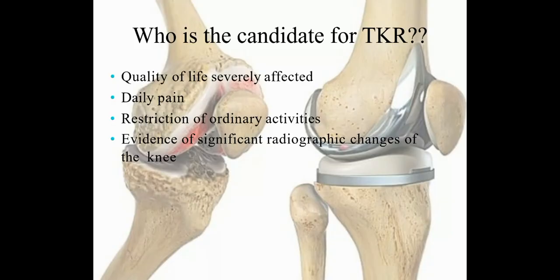The right candidate for TKR is a patient whose quality of life is severely affected by osteoarthritis of the knee joint, experiencing daily pain, or finding it difficult to perform activities of daily life. Restriction of ordinary activities and evidence of significant radiographic changes of the knee are also criteria. OA knee is classified based on radiological criteria, and significant x-ray changes indicate a candidate for TKR.